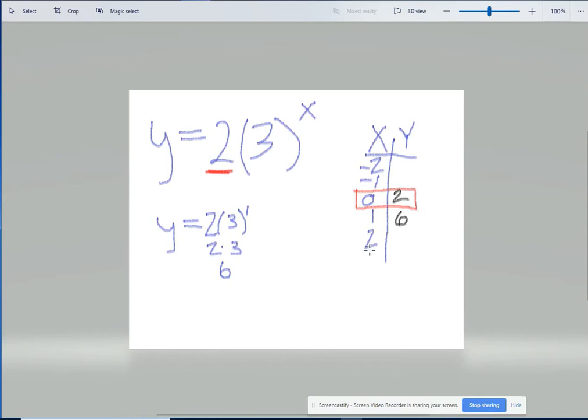Now we're going to figure out what 2 is by replacing the x with a 2 and then solving it again. So y equals 2 times 3 to the power of 2. So 2 times 9 because 3 squared turns into a 9, and then 2 times 9 is going to give you 18. So then we put 18 into our table.